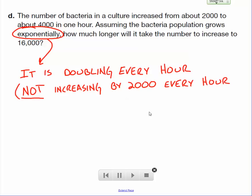It's not increasing 2,000 every year. It just increased 2,000 the first year because it doubled the first year. So if it's at 4,000 and it doubles, it's going to be at 8,000. And if it's at 8,000 and it doubles, it will be at 16,000.